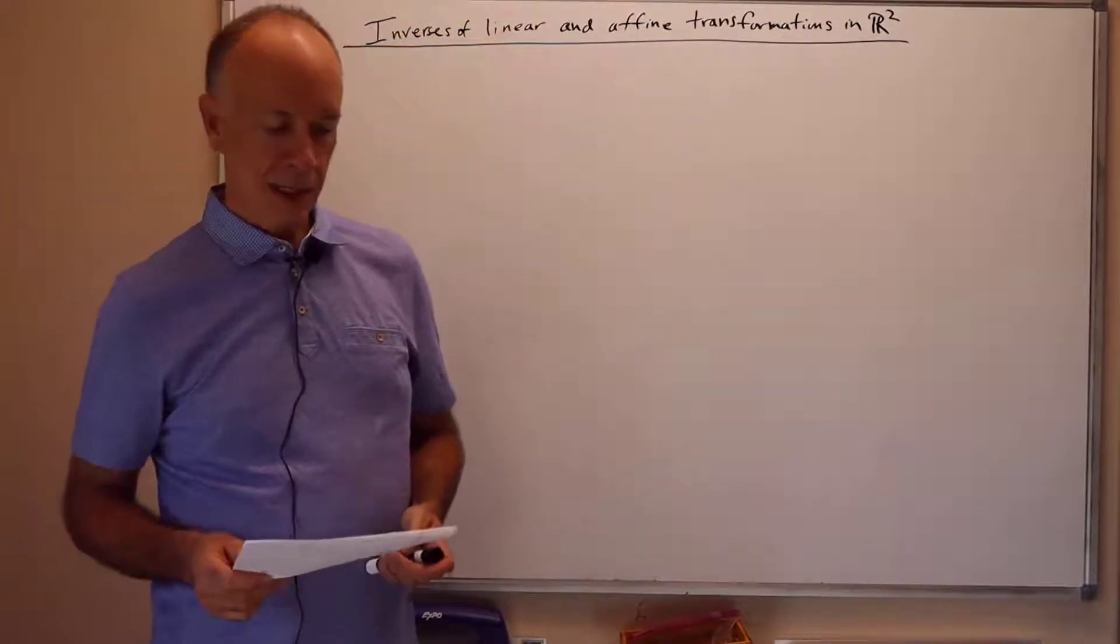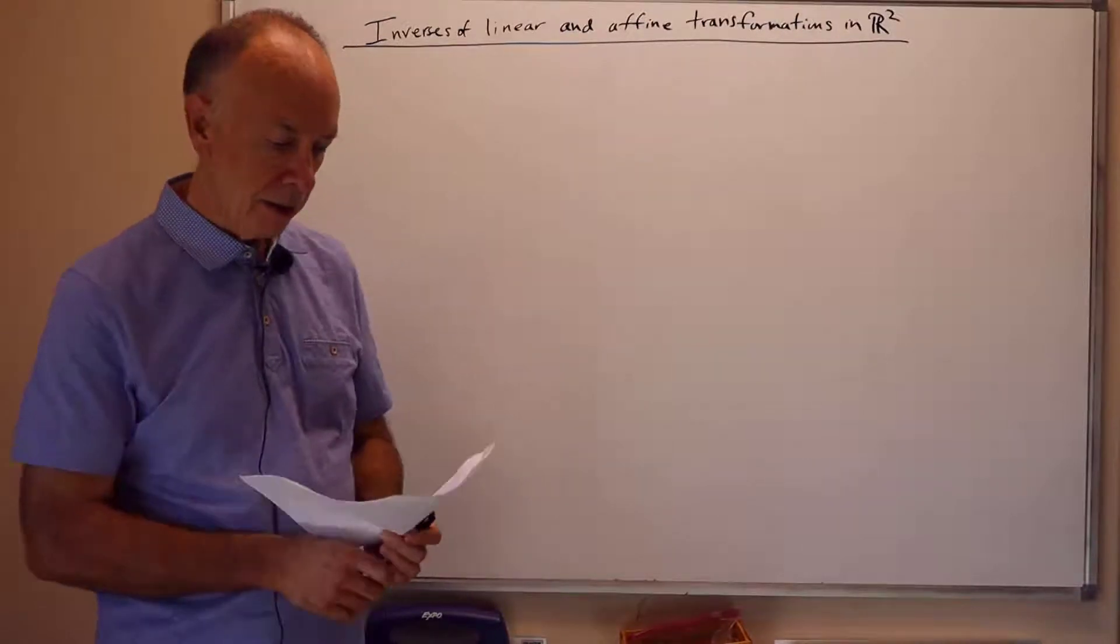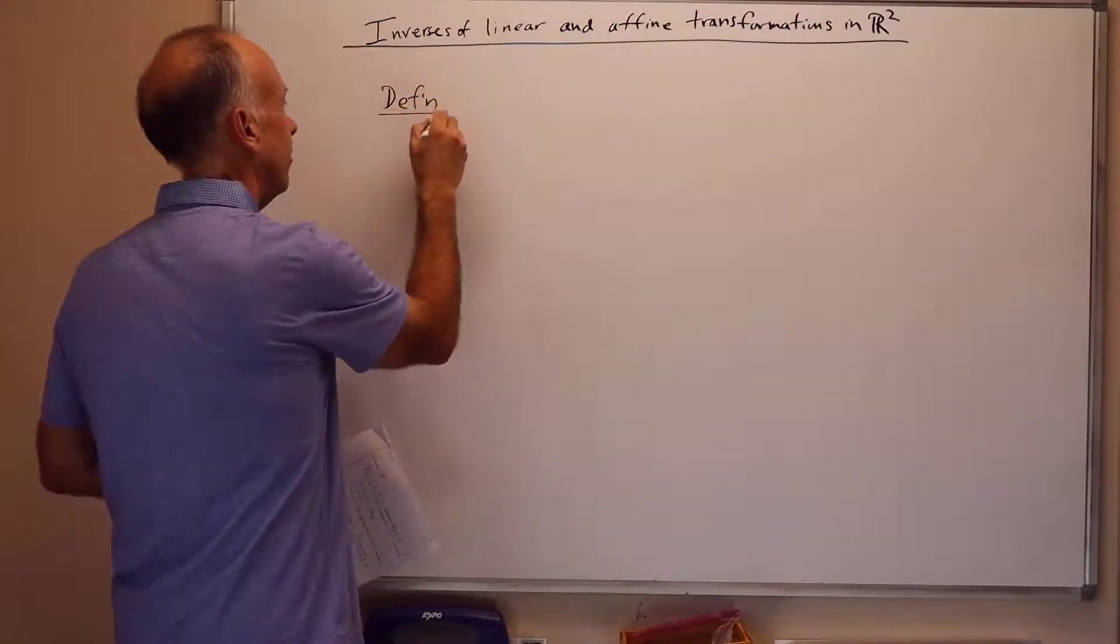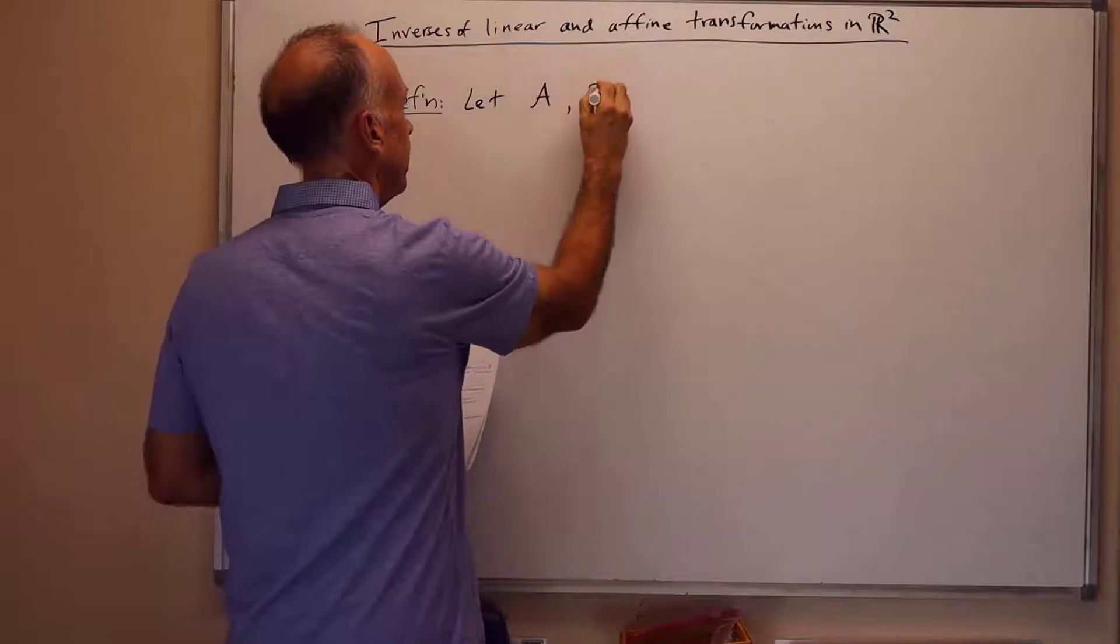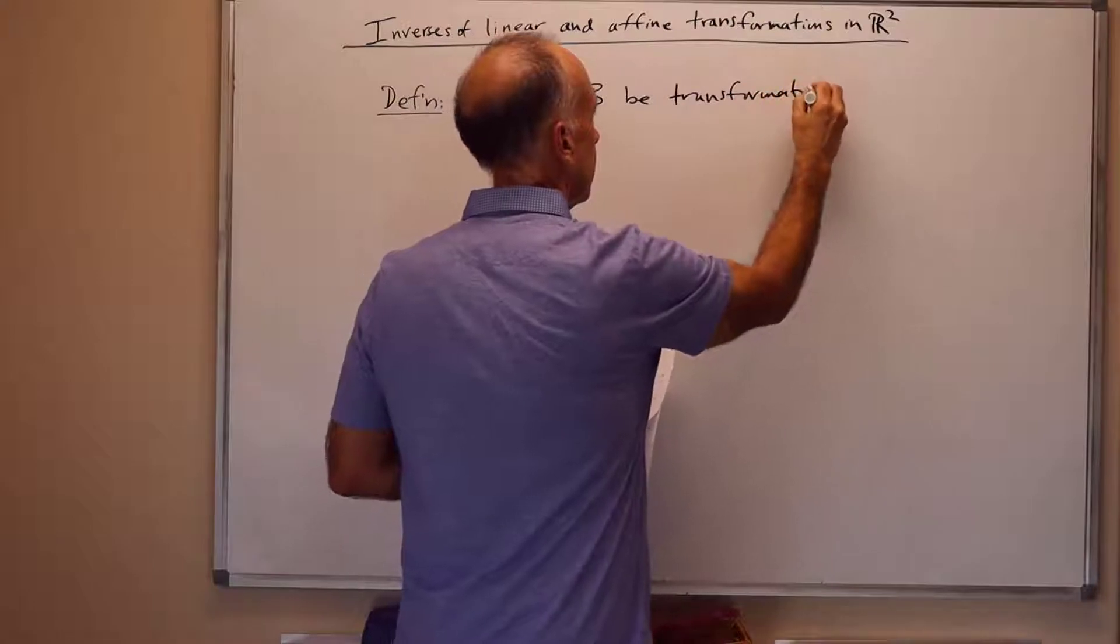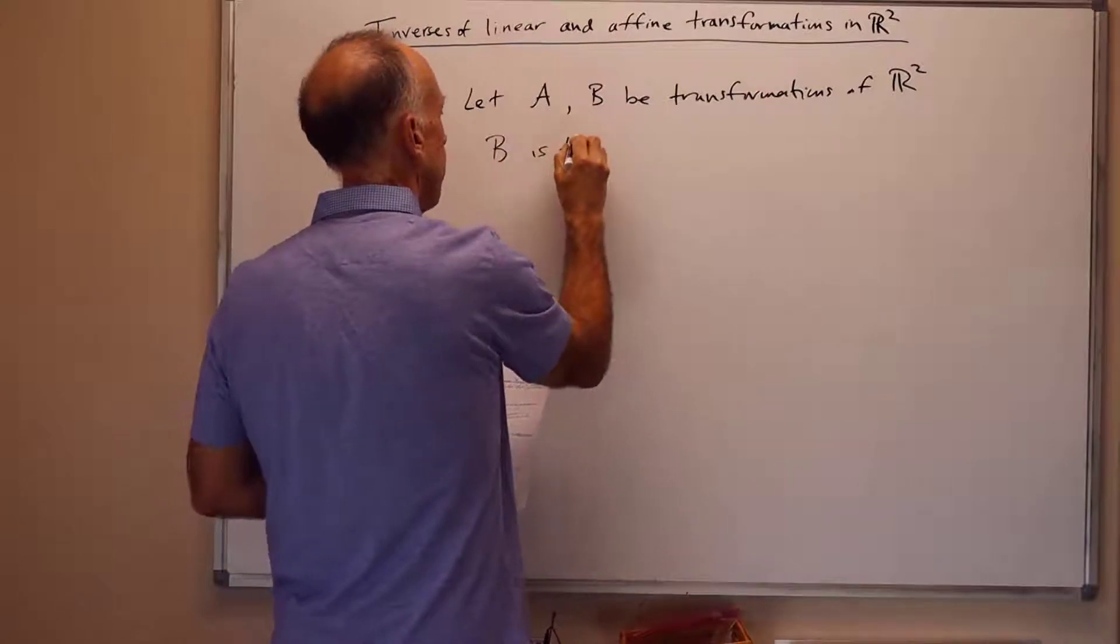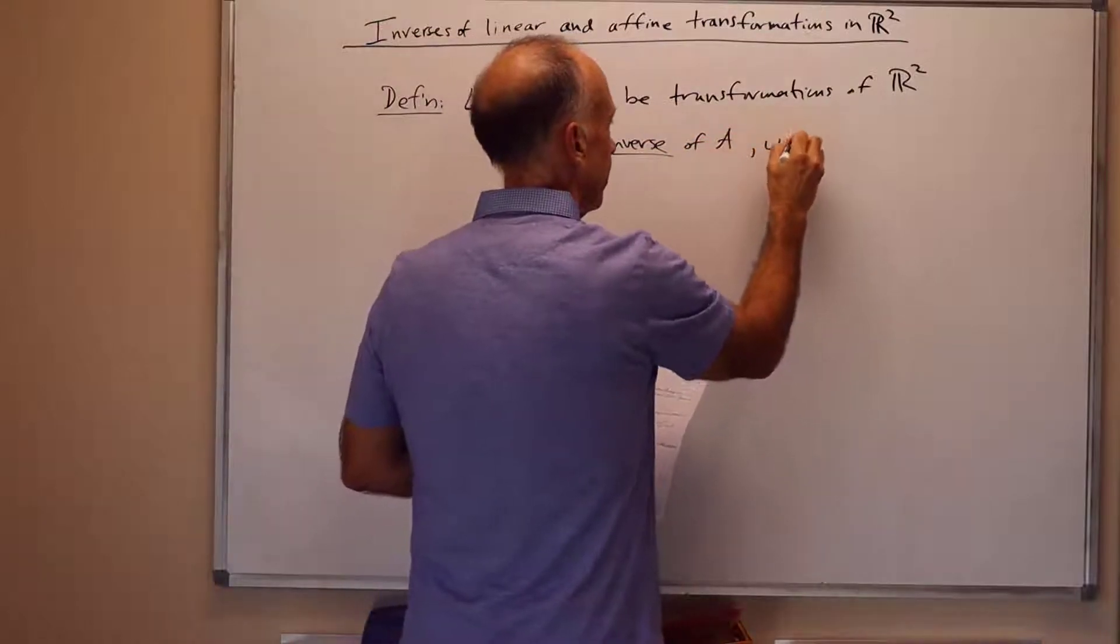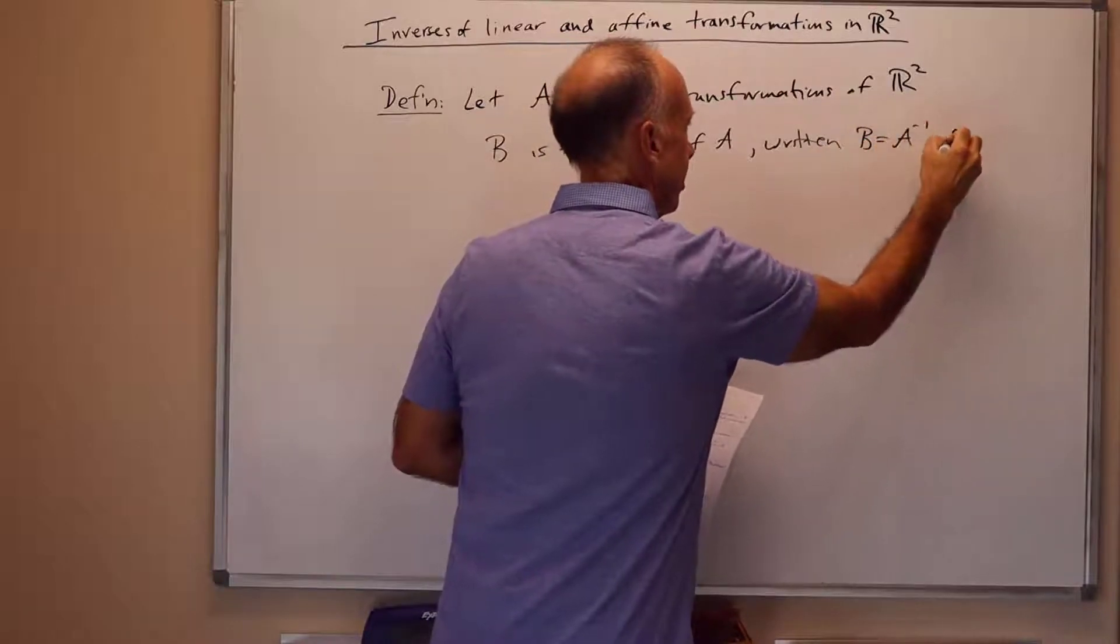Hello. In this presentation, we'll talk about inverses of linear and affine transformations in R2. First of all, let's do the definition of this. This is the same definition of inverse as you've surely seen in other math classes. But let A and B be transformations of R2. We say that B is the inverse of A, written B equals A inverse, if the following holds.